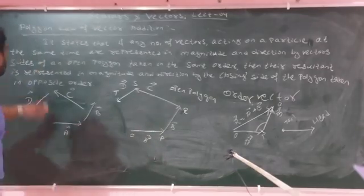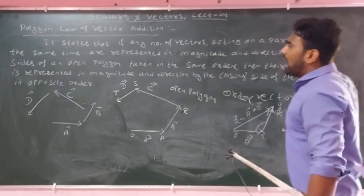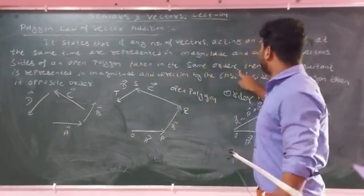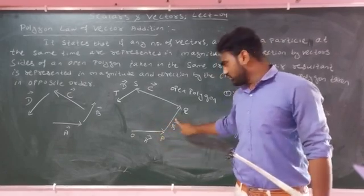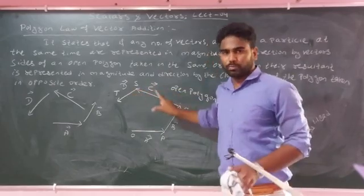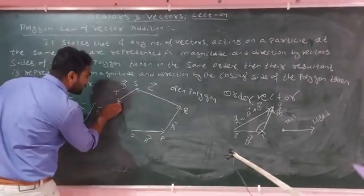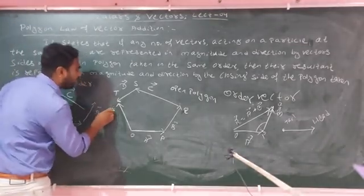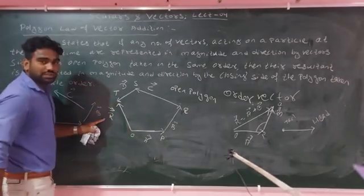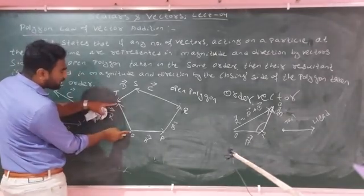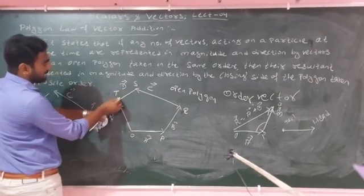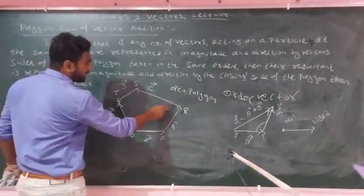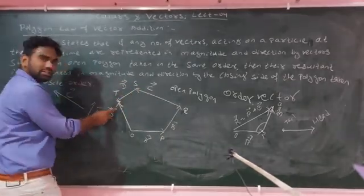So it states that if any number of vectors acting on a particle at the same time are represented in magnitude and direction by the sides of an open polygon taken in the same order, then the closing side is the resultant vector — taken in the opposite order.